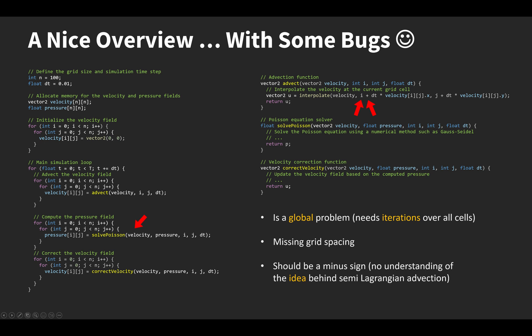But even in this high-level implementation, there are some problems. First, computing the pressure field is a global problem, so going once through all the cells is not enough. We need an outer loop that repeats for a certain number of iterations. In the advection step, the grid spacing is missing. We could adjust the units for velocity, but this would be quite unnatural. A more serious problem is that semi-Lagrangian advection needs to go backward in time, so we need a minus sign here.